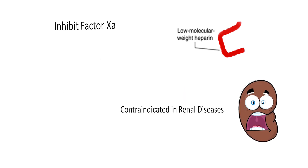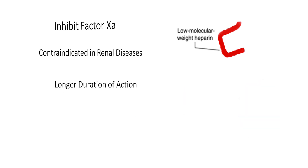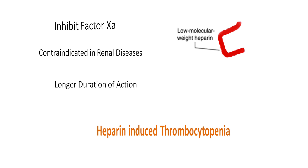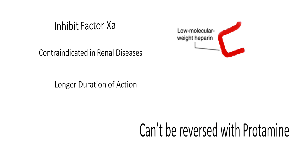Low molecular weight heparin is relatively contraindicated in renal diseases. It has a longer duration of action, so frequent lab monitoring is generally not necessary. But if monitoring is needed, standard APTT does not reflect the action of low molecular weight heparin — anti-factor Xa level is needed, which is not readily available in every setup. Heparin-induced thrombocytopenia with low molecular weight heparin has mixed reporting, with some studies showing equal risk and some showing reduced risk compared to unfractionated heparin. Low molecular weight heparin cannot be reversed with protamine.